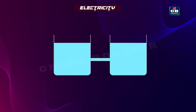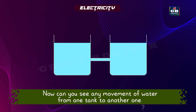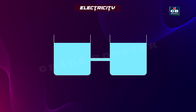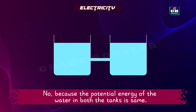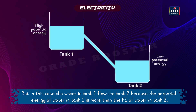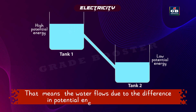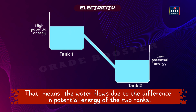Here, two water tanks are connected, and they both are at the same level. Can you see any movement of water from one tank to another? No, because the potential energy of the water in both the tanks is the same. But in this case, the water in tank 1 flows to tank 2, because the potential energy of water in tank 1 is higher than the potential energy of water in tank 2. That means the water flows due to the difference in potential energy of the two tanks.